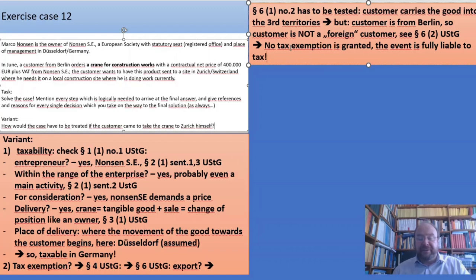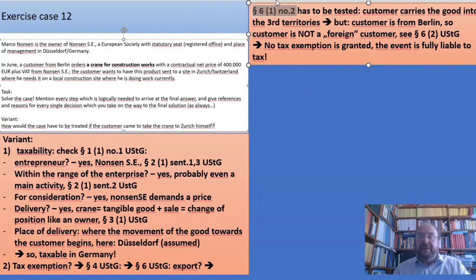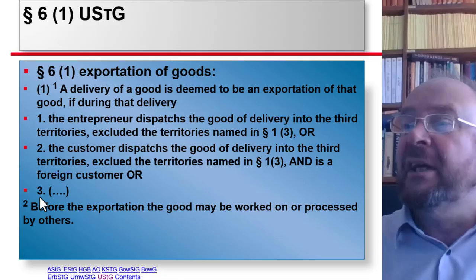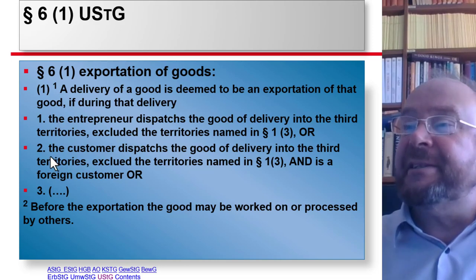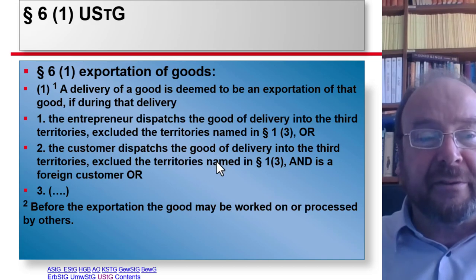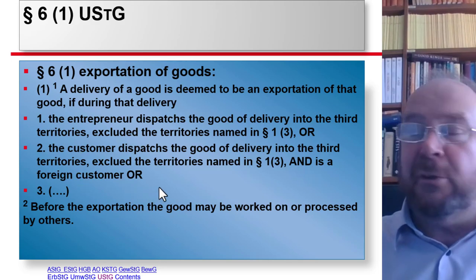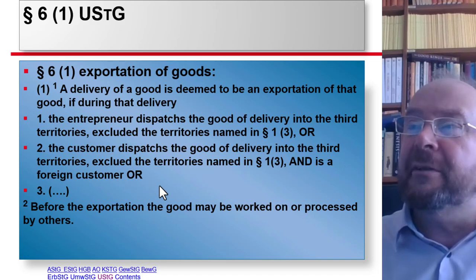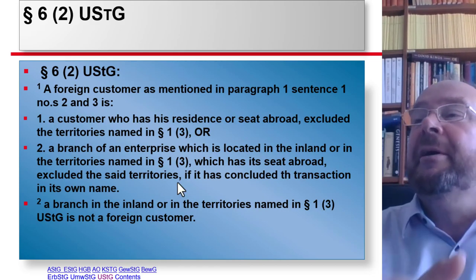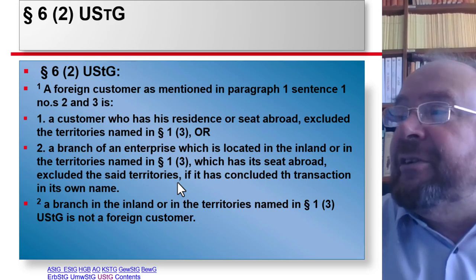We are going to check all these vital points again just to be on the safe side. Under §6(1) No.2, the customer dispatches the good into the third-country territories, but the customer must be a foreign customer. A foreign customer, as mentioned in §6(1) sentence 1 Nos. 2 and 3, is a customer who has residence or a branch of an enterprise which is located outside the inland. Since the customer is from Berlin, there is no foreign customer.